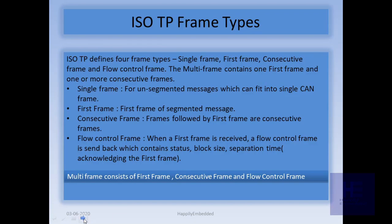For this, ISO-TP defines 4 types of frames: Single Frame, First Frame, Consecutive Frame, and Flow Control Frame. In a Single Frame we can send 7 bytes of data. Although the payload is 8 bytes, only 7 bytes are available for data because the first byte is used to add metadata.